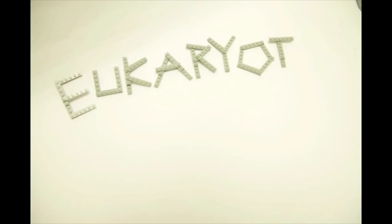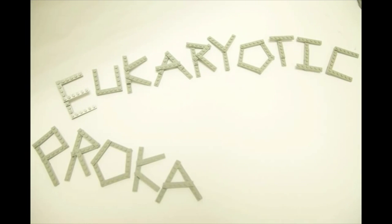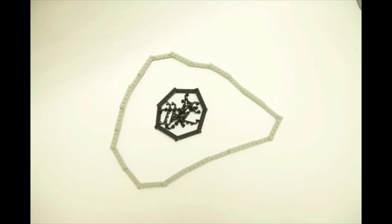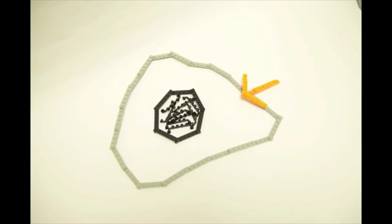Cells can be described as belonging to one of two categories, eukaryotic or prokaryotic. The defining quality of the eukaryotic cell is the nucleus, basically a little pouch that they keep their DNA in.